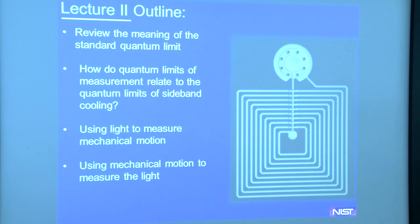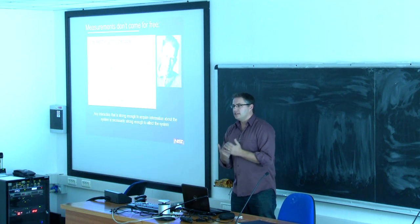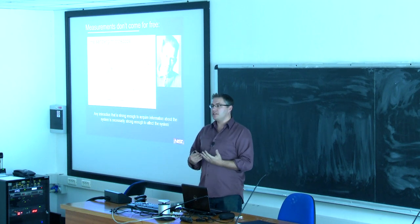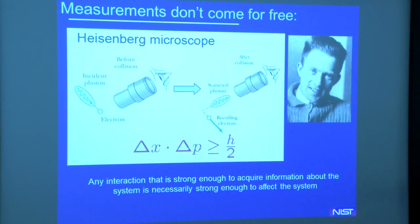A lot of the confusion comes from the fact that you can ask many different questions. You can constantly flip around who's being measured, who's the probe, who's the meter. I'll talk about using light to measure the mechanics and then turning the same experiment around to think about the mechanics measuring the light. I'll reiterate the Heisenberg microscope type picture — the canonical measurement picture. You have some system of interest, you want to acquire information about it, therefore you have to interact with it. You scatter something off it that acquires information and necessarily disturbs it. Cavity optomechanics cleanly realizes this, where the system of interest is our beautifully nanofabricated mass, and we shine photons off of it — microwave or optical.